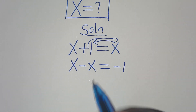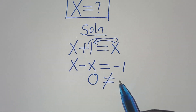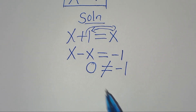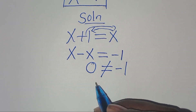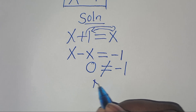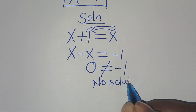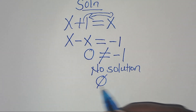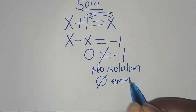This means that x minus x is equal to 0, and this is not equal to minus 1. This implies that there is no solution, and this means that we have an empty set.